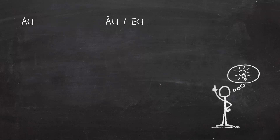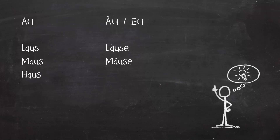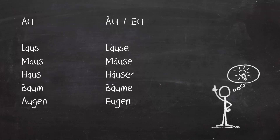Let's compare the two diphthongs to highlight the differences and make sure we get the pronunciation right. Repeat after me: Laos — Loise, Maus — Mäuse, Haus — Häuser, Baum — Bäume, Augen — Eugen.